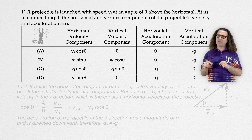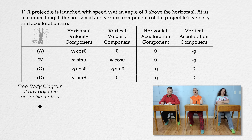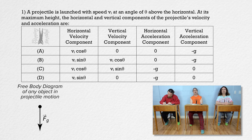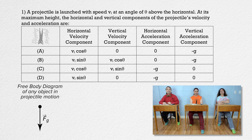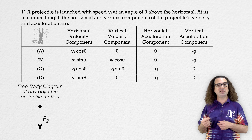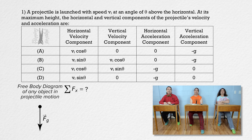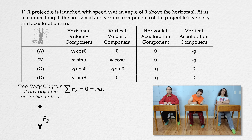What does the free body diagram of any object in projectile motion look like at any point in its path? The force of gravity acts down — that is it. That is the only force that acts on an object in projectile motion. Unless otherwise stated in AP Physics 1, we assume the object is flying through the vacuum you can breathe — we ignore air resistance. The net force in the x direction equals zero because there are no forces in the x direction in the free body diagram. Net force in x also equals mass times acceleration in the x direction. The mass is not zero, so dividing both sides by mass gives acceleration in the x direction equals zero.